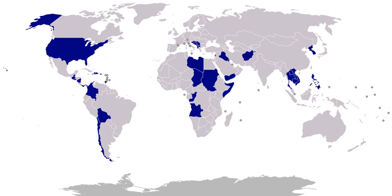1833, Argentina, October 31–November 15: a force was sent ashore at Buenos Aires to protect the interests of the United States and other countries during an insurrection. 1835–1836, Peru, December 10, 1835–January 24, 1836 and August 31–December 7, 1836: Marines protected American interests in Callao and Lima during an attempted revolution. 1835–1842, Florida Territory: United States Navy supports the Army's efforts at quelling uprisings and attacks on civilians by Seminole Indians. Government's efforts to relocate the Seminoles to west of the Mississippi are hindered by seven years of war.